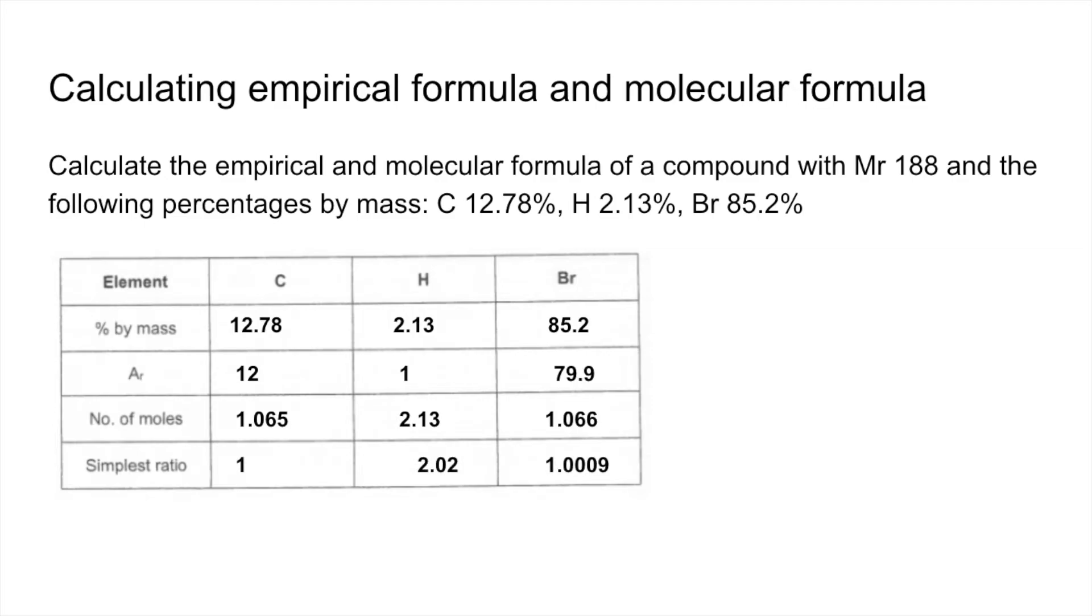And obviously, the 2.02 is just 2. 1.009 is just 1. So the empirical formula is CH2Br.